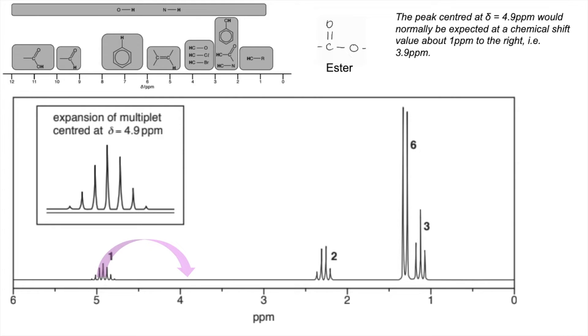So moving on to the proton NMR spectrum. We know that it's an ester, so I've put the functional group there. That's going to help us decide what goes where in terms of the shift values. There's that information about the peak at 4.9. I've just put that lilac arrow there to say that peak should be about there.